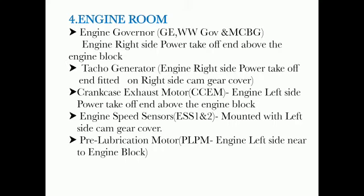Engine Room: Engine Governor GE, WW Governor and MCBG. Engine right side — Power Takeoff, fitted on right side, Cam Gear Cover, Crank Case Exhaust Motor CCEM. Engine left side — Power Takeoff end, above the engine block. Engine Speed Sensors ES-S1 and ES-S2, mounted with left side cam gear cover. Pre-Lubrication Motor PLPM, engine left side near to engine block.